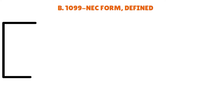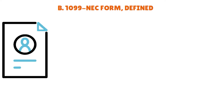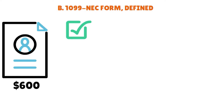Form 1099-NEC is the version of Form 1099 you'll use to tell the IRS whenever you paid an independent contractor or other self-employed person $600 or more in compensation — that's the threshold, $600 or more over the course of the entire year. The IRS uses this information to independently verify your income and therefore your federal income tax levels.